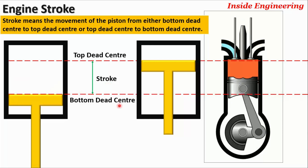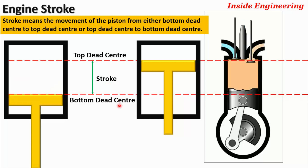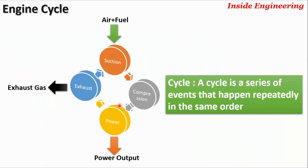Engine cycle, or engine operating cycle, means a series of events or processes which help to convert the air-fuel mixture into useful power. One engine cycle involves the following four processes: suction, compression, power, and exhaust.